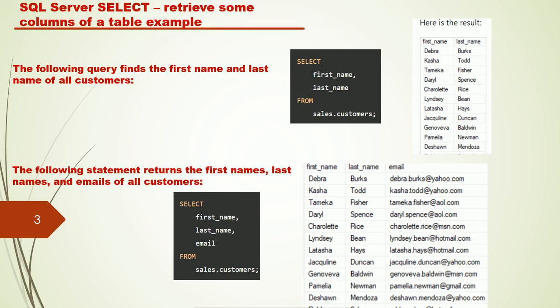Similarly, you can mention more fields as per your requirement. The following statement returns the first name, last name, and email of all customers: SELECT first_name, last_name, email FROM sales.customer. While executing this query, you will retrieve all the first name, last name, and email of customers. If you want to retrieve specific fields from a table, you have to mention all the field names separated by commas.